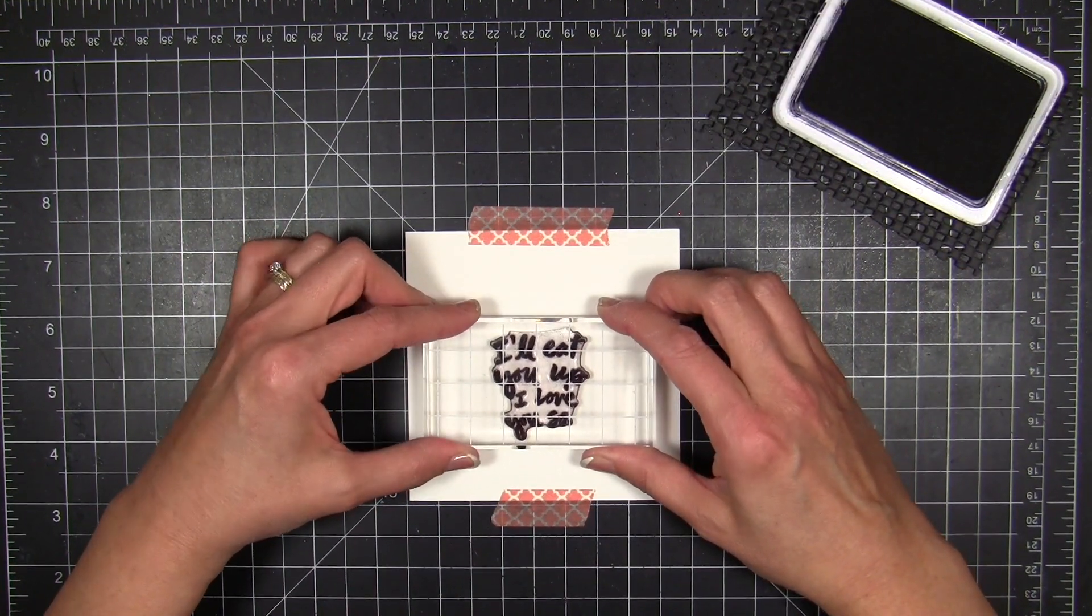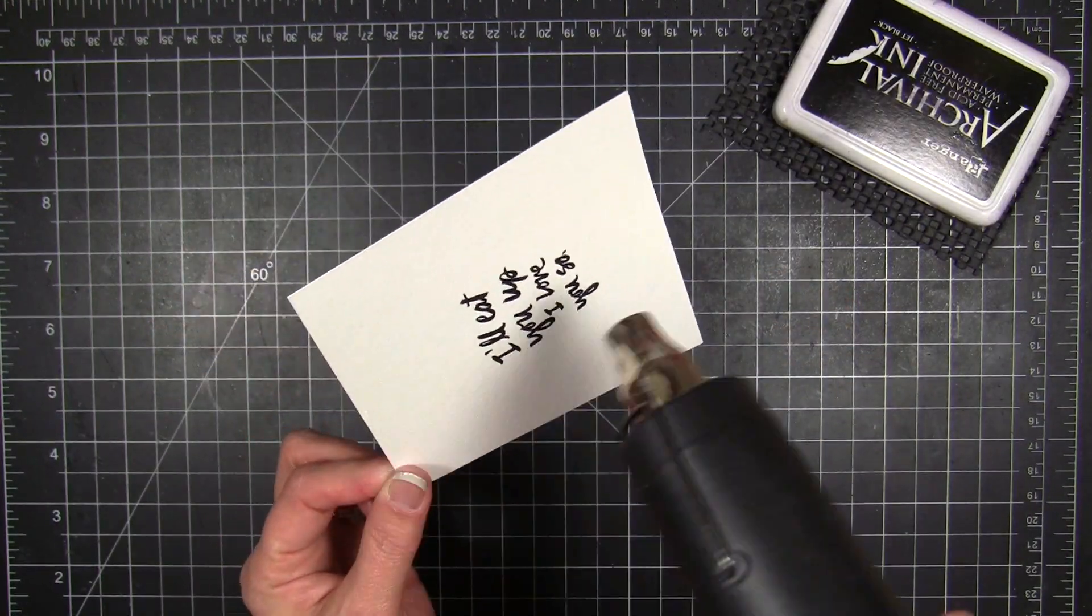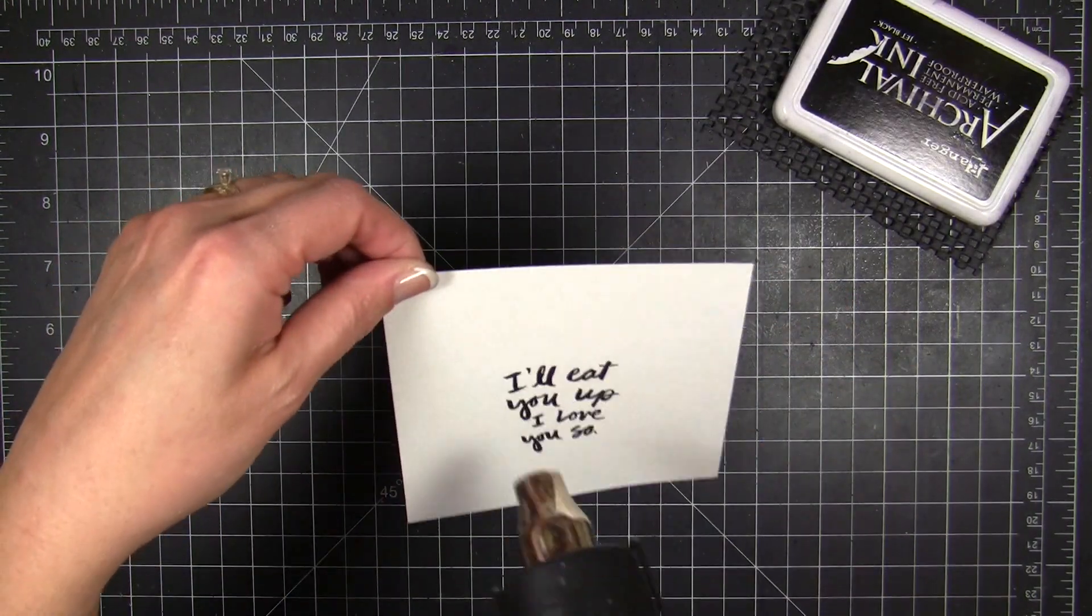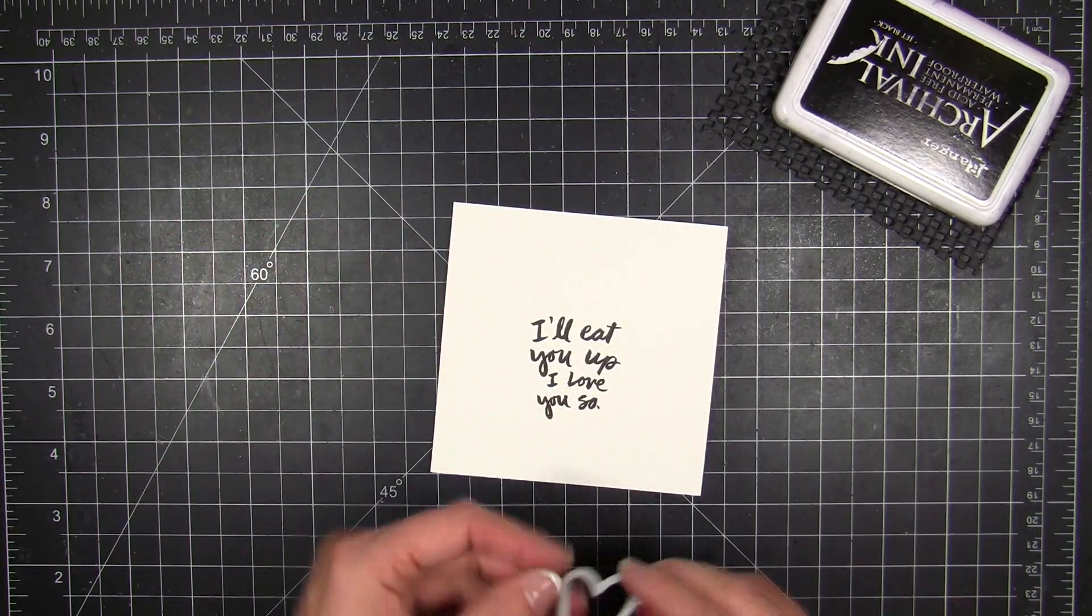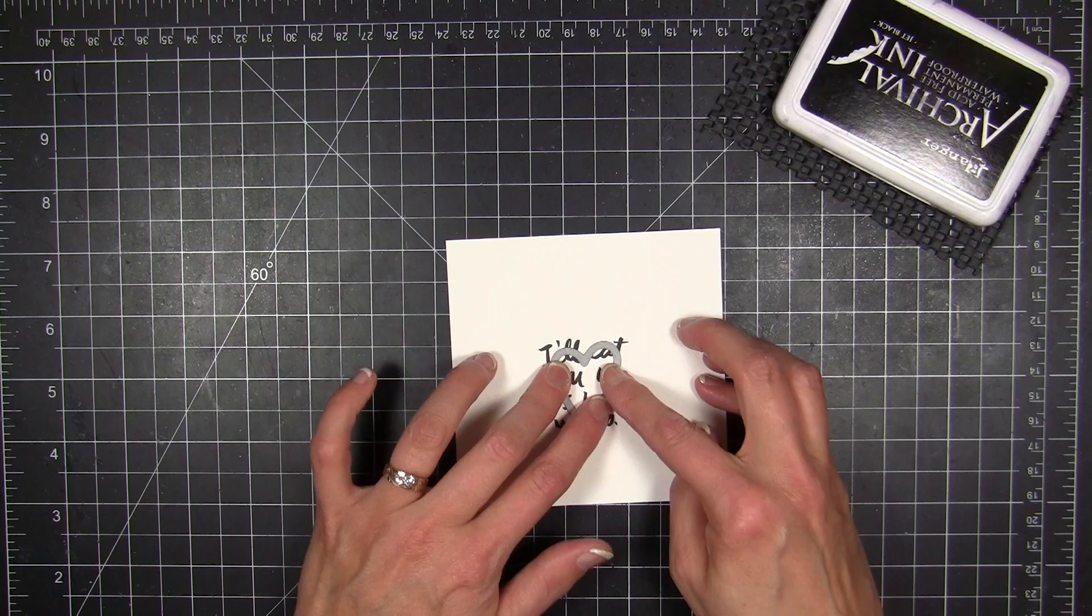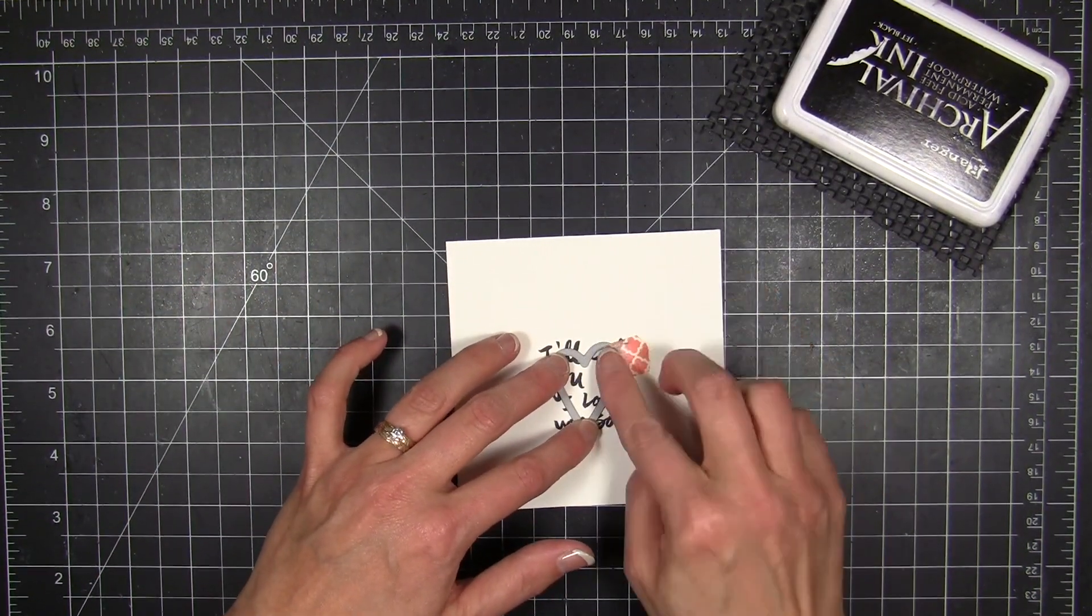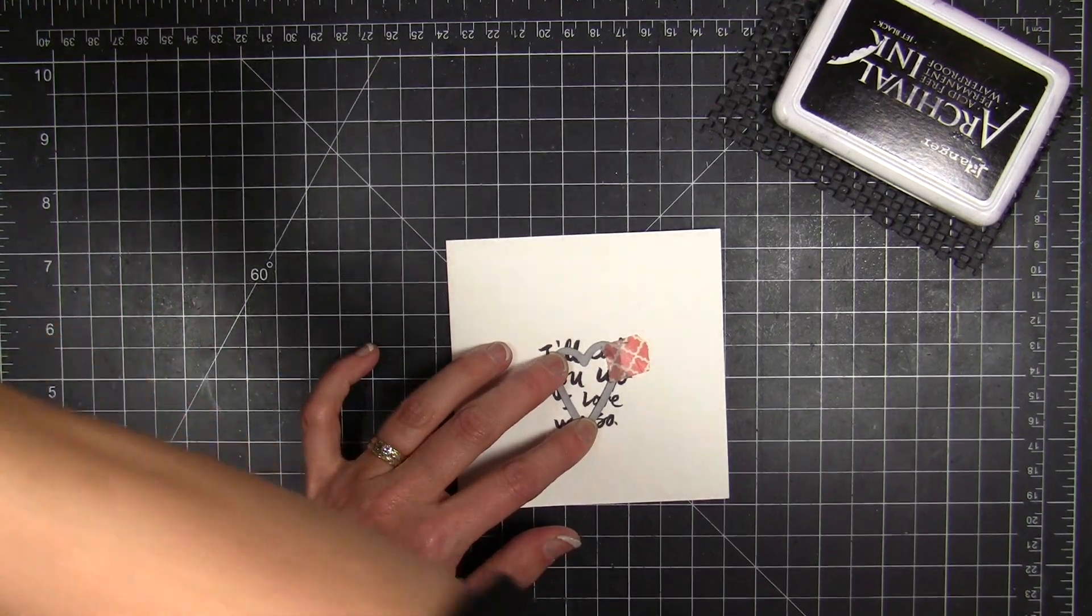I'm gonna ink up the sentiment with Archival Jet Black and stamp it onto the smooth side of a four and a quarter inch square of watercolor paper. I heat set the ink very quickly because I'm gonna send this through my Big Shot. I've got the smallest of the folk heart dies right there in the center, right over the top of the sentiment. I'm gonna use a little bit of washi tape to anchor it down.